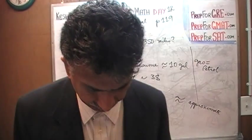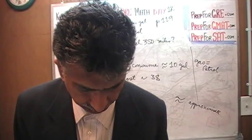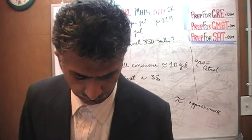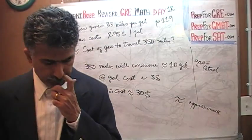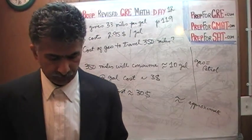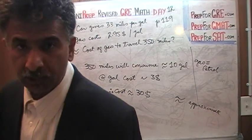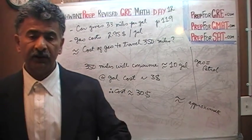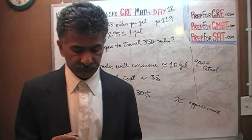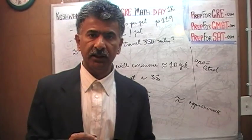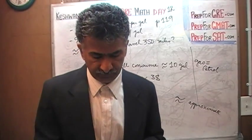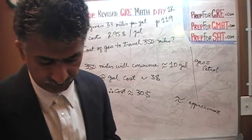They're looking for an approximate answer. And since the answers are so far apart — they're giving you choices between ten, twenty, thirty, forty, and fifty — it's not going to be twenty dollars and it's not going to be forty dollars, it's going to be about thirty dollars. The answer is C.